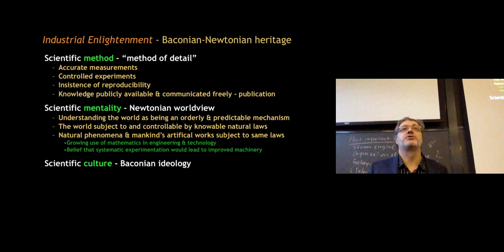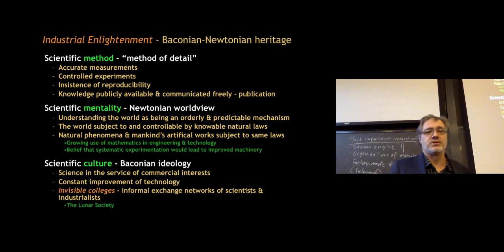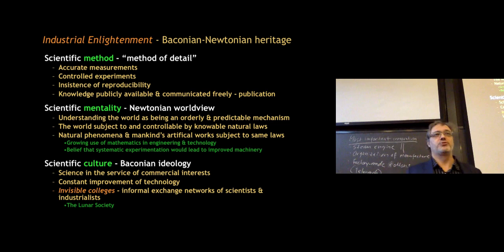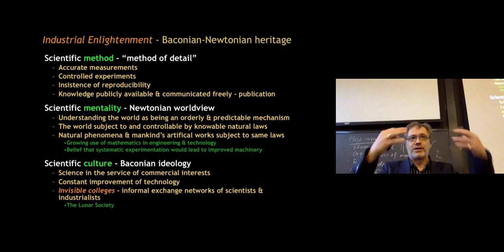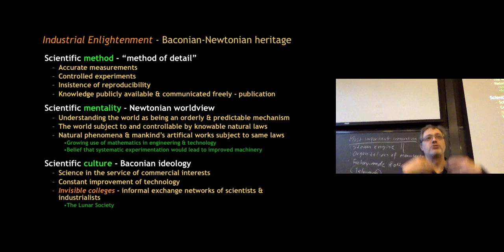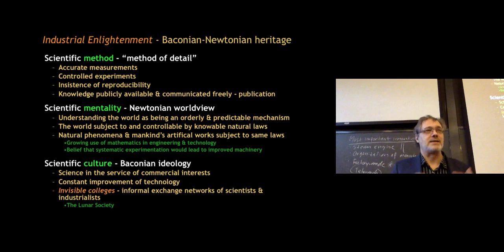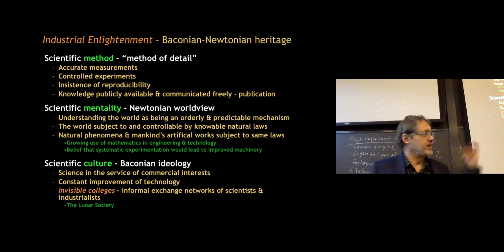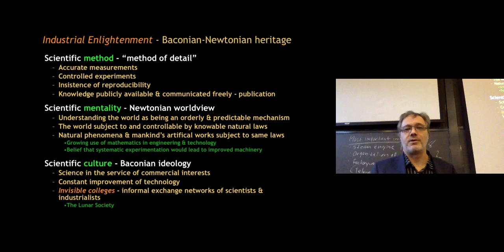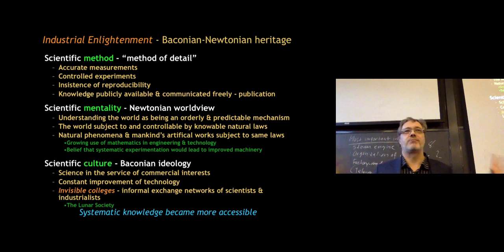The last part was about scientific culture, or the Baconian ideology — that science has a larger role in society. From Francis Bacon, science should be in the service of commercial interest and used to generate profit. Connected to this is a principle of constant improvement in technology. Also connected is what's been described as invisible colleges — increased interaction between scientists and practical men, engineers, and craftsmen. One example is the Lunar Society, located in Birmingham, where industrialists met with natural philosophers to discuss issues of common interest. Overall, systematic knowledge became more accessible.